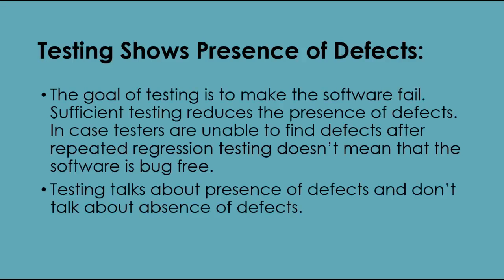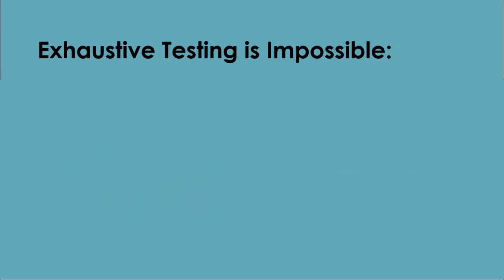Testing shows presence of defects. The goal of testing is to make the software fail. Sufficient testing reduces the presence of defects. In case testers are unable to find defects after repeated regression testing, it doesn't mean that the software is bug free. Testing talks about the presence of defects and doesn't talk about the absence of defects.